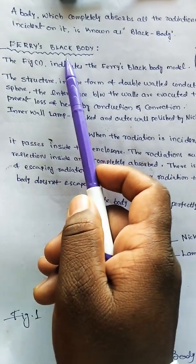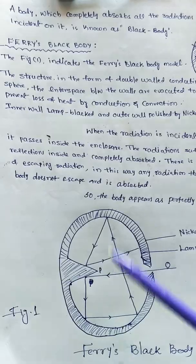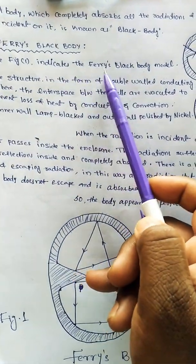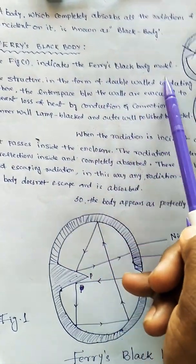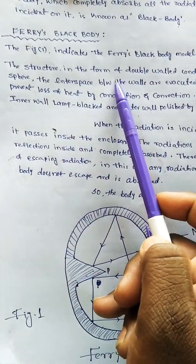Let's see what is Ferry's black body model. The figure one indicates the Ferry's black body model. The structure is in the form of double-walled conducting sphere.